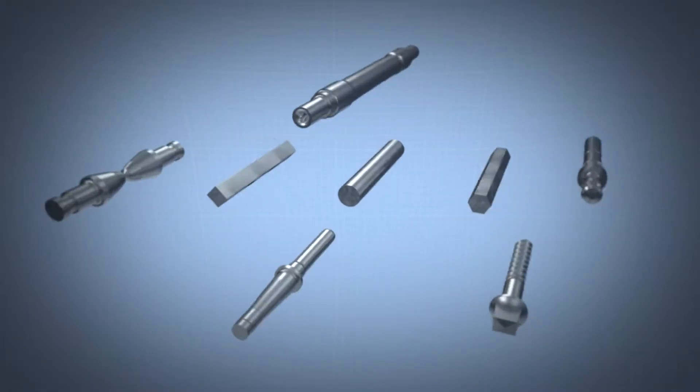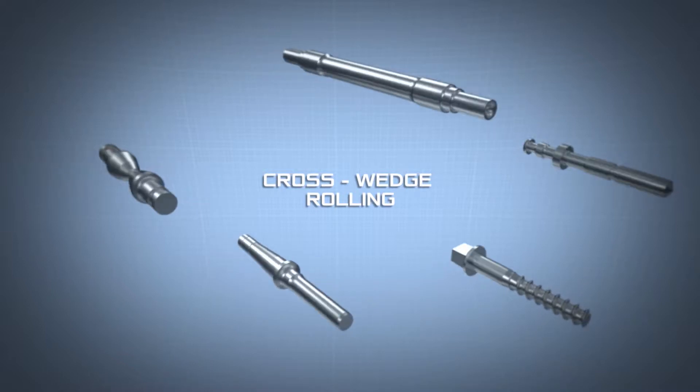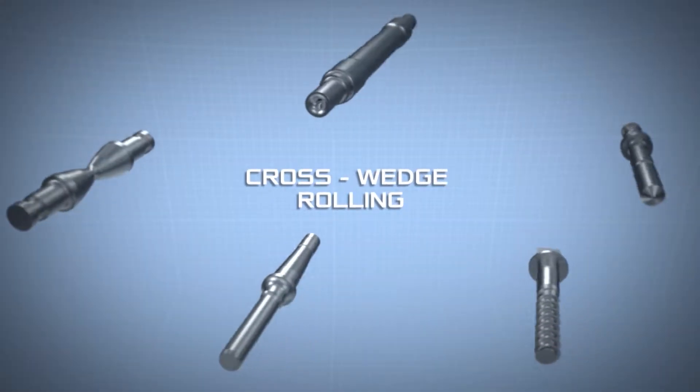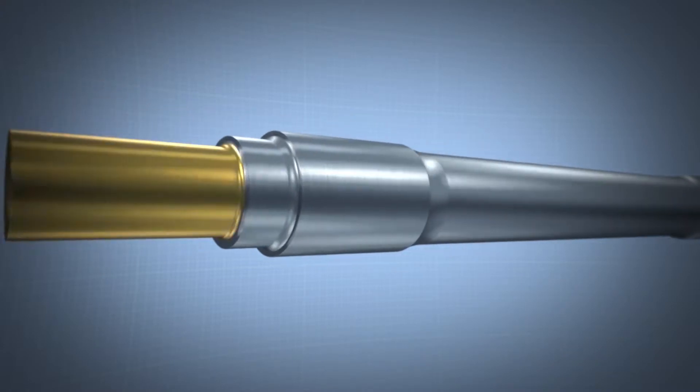These are the blanks and these are the products that can be obtained from the blanks by cross wedge rolling. Cross wedge rolling is the most efficient way of making axles and step shafts with drop in diameters up to four times or more.